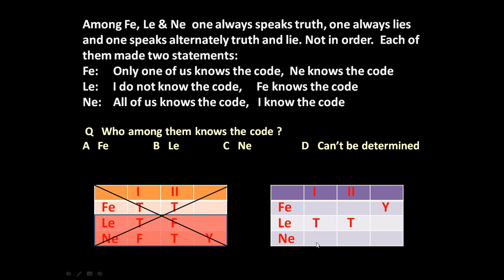Ni says 'All of us know the code' — this is false. Ni says 'I know the code' — this is false again. So Ni is false-false, meaning Ni always lies. Phi says 'Only one of us knows the code' — true. Phi says 'Ni knows the code' — false. So Phi is true-false, meaning Phi speaks alternately. This satisfies all conditions, so the answer is Phi knows the code.